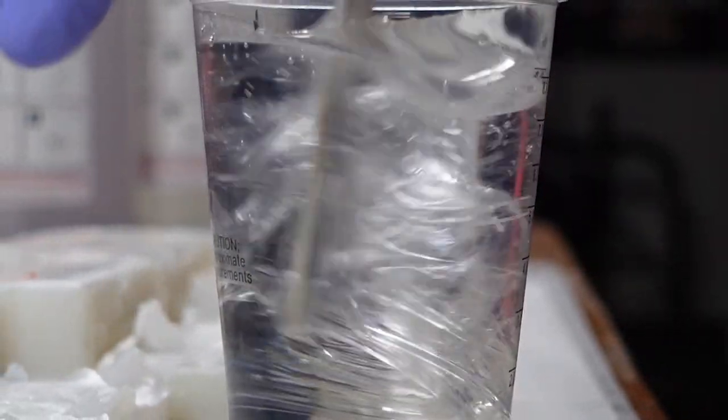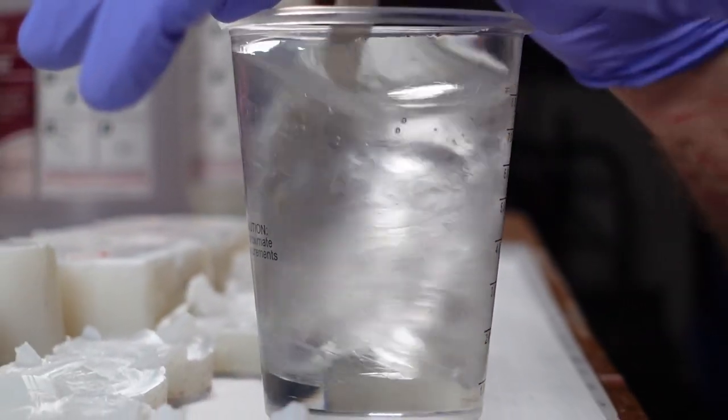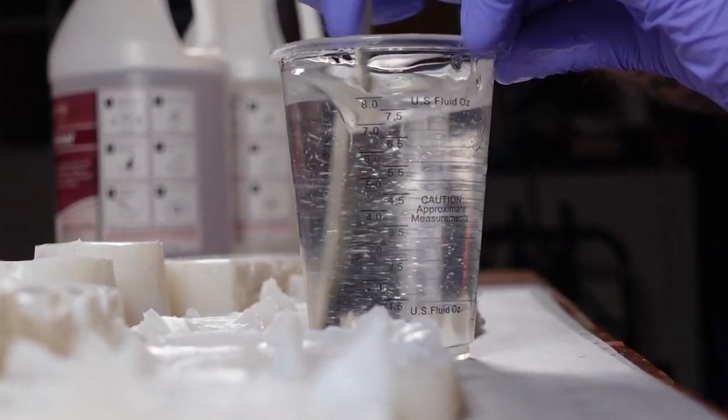Mix the resin until it's clear with no visible streaks, which usually takes anywhere from 3-5 minutes depending on your stirring implement and the veracity with which you mix the goo.